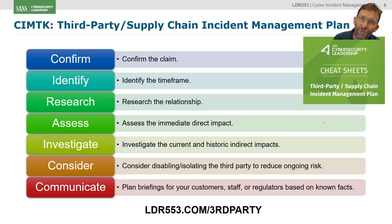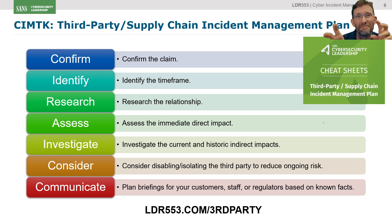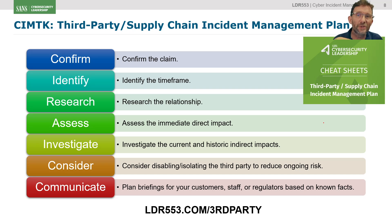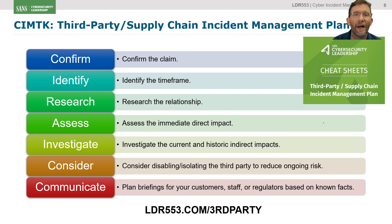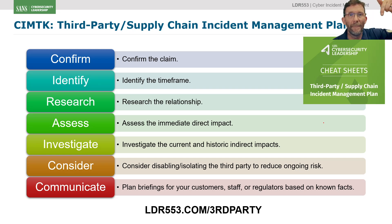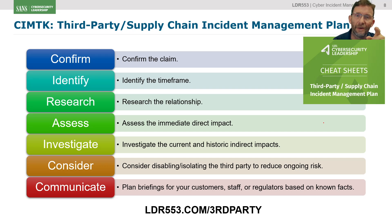This is more of an intro for what we're going to talk about next time. When I was first putting together LDR 553, I realised there's no real dedicated, focused incident management plan around third parties or supply chain incidents. So I came up with one. In the next episode, I'm going to go through all the various stages — confirm, identify, research, assess, investigate, consider, and communicate — and explain the thinking behind each one. Your homework for next time is to go to LDR553.com/thirdparty, which will redirect you to the SANS cheat sheet where you can download the whole form as a document to print out or stick up in your cubicle.